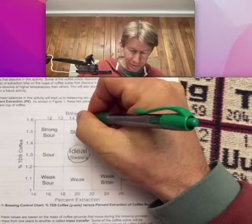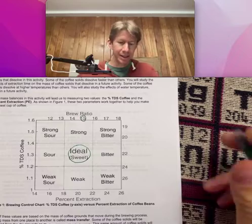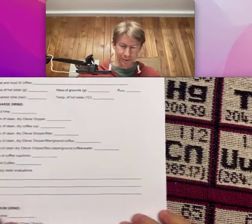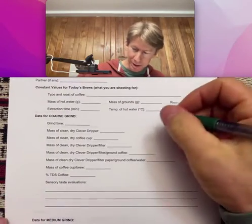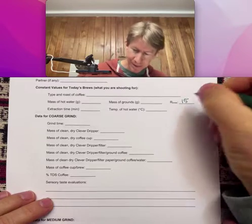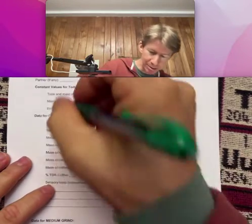I'm going to choose a brew ratio of 15, so for my data here, my brew ratio is going to be 15. I'm going to choose 350 grams of water that I'm going to be starting with.